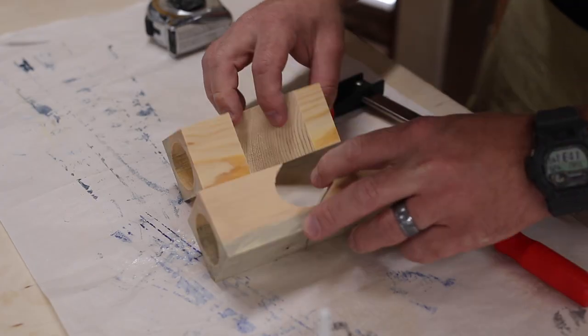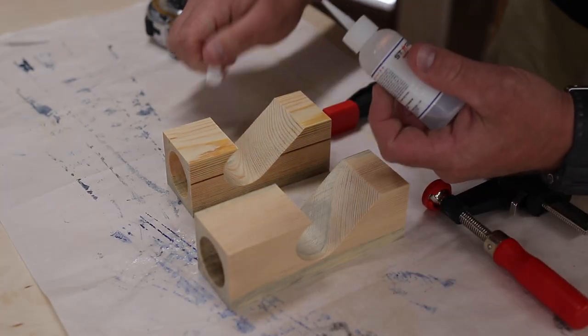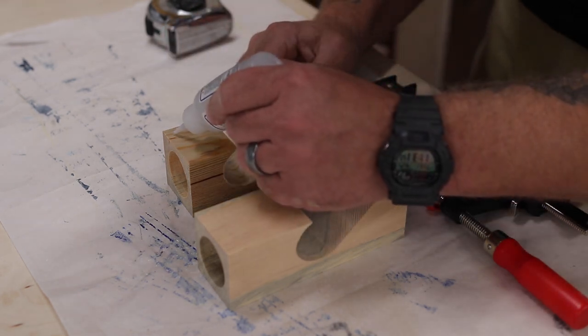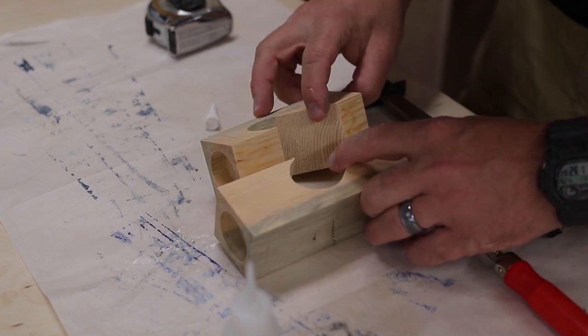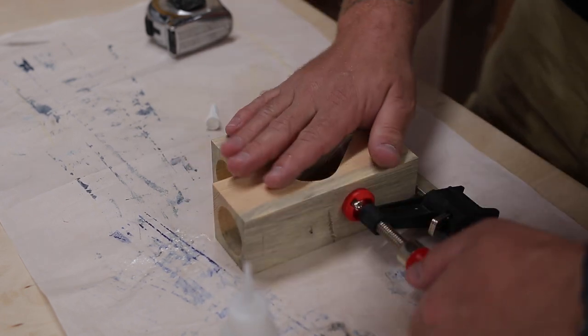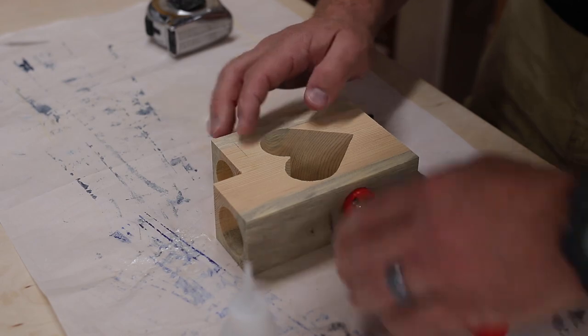Now you can use wood glue for this. I chose to use CA glue or super glue for this job because I wanted to get it done quick, mainly for video purposes. But even with the CA glue I'm gonna throw a clamp on here to make sure that they get a nice tight bond. We don't want a seam in the middle.